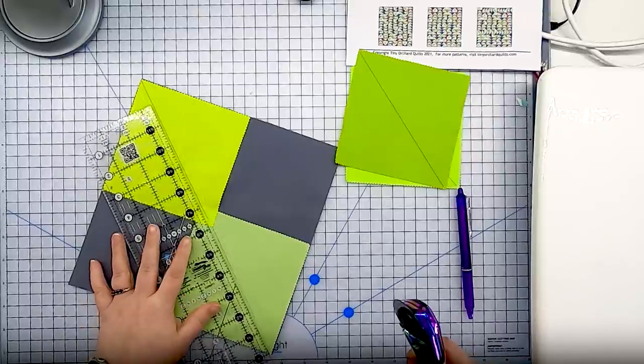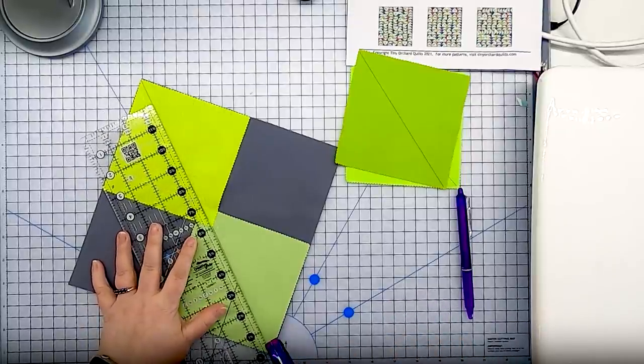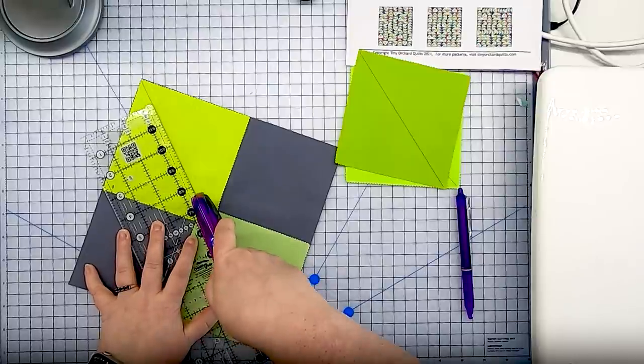and then I am going to sew a quarter of an inch on either side of this line. Once we have those lines sewn then I am going to cut these apart on the line that you drew, the diagonal line.